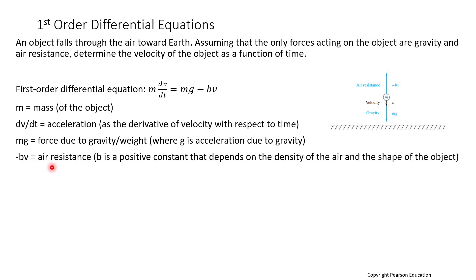And then negative bv is our air resistance. And b is a positive constant that depends on the density of the air and the shape of the object. And so just a sketch for you for seeing what's going on, m is your mass, it's falling toward earth. And so v would be positive in the downward direction.